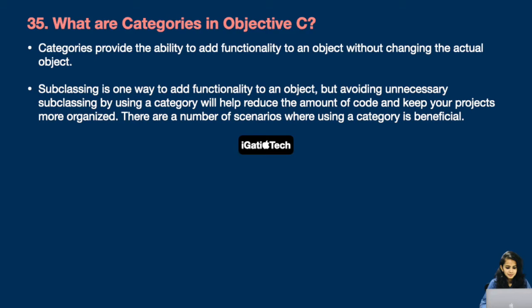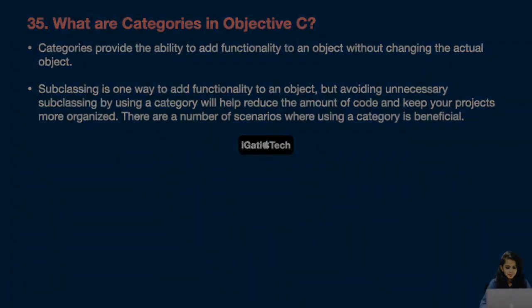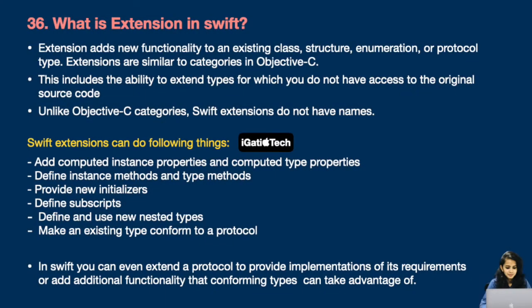Question number 35: what are categories in Objective-C? Categories provide the ability to add functionality to an object without changing the actual object. Subclassing is one way to add functionality, but avoiding unnecessary subclassing by using a category helps reduce the amount of code and keeps your project more organized. There are a number of scenarios where using a category is beneficial.